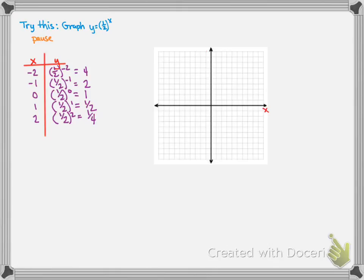Looking at the graph, here's what those points look like. Drawing in a smooth curve, we get a graph that looks like this. Again, we have a horizontal asymptote at the x axis.